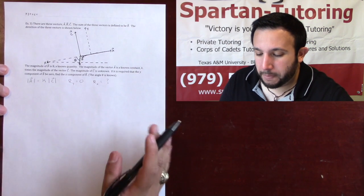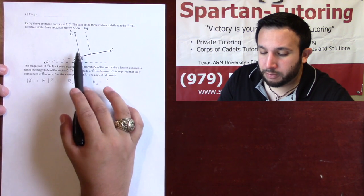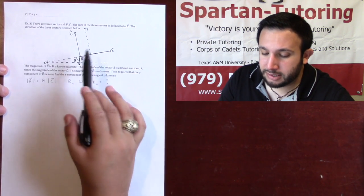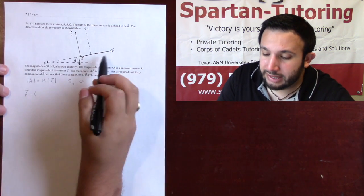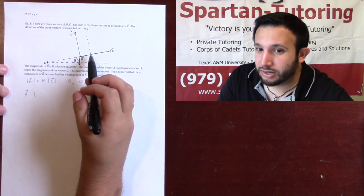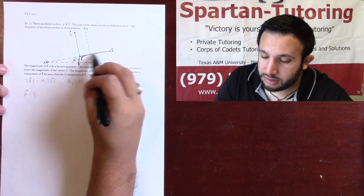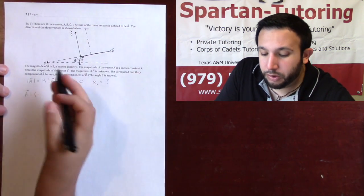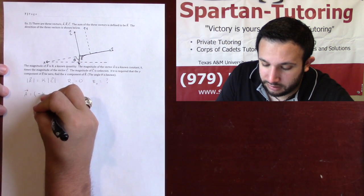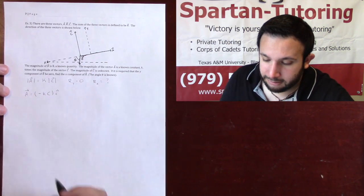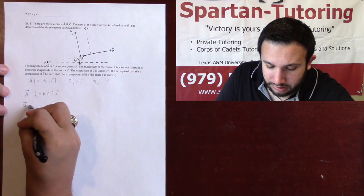What I always like to start by doing is writing the components for A, B, and C. Vector A is going in the negative x-direction — positive x is this way, so negative x goes up that way. It will be negative, and since the magnitude of A is k times c, it will be negative k times c in the i-direction. It has no y-component.